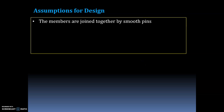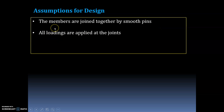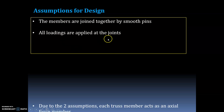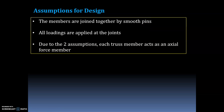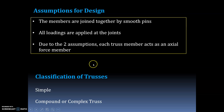While designing trusses, we make some assumptions: first, the members are joined together by smooth pins; second, all loadings are applied at the joints. Due to these two assumptions, each truss member acts as an axial force member only.